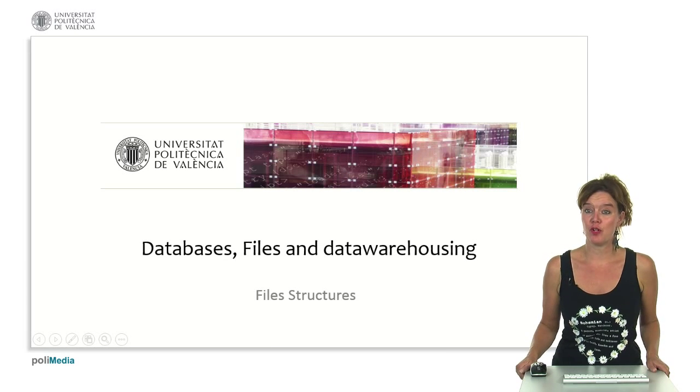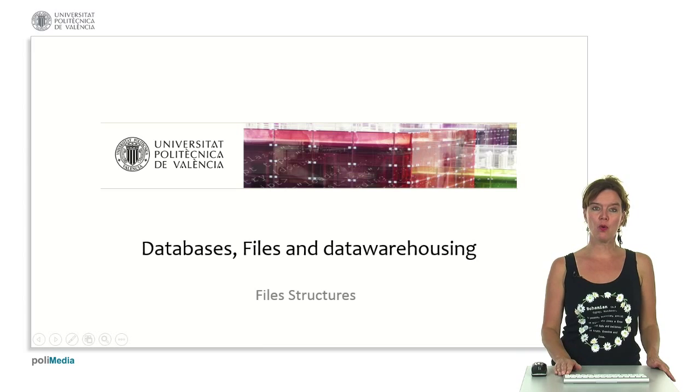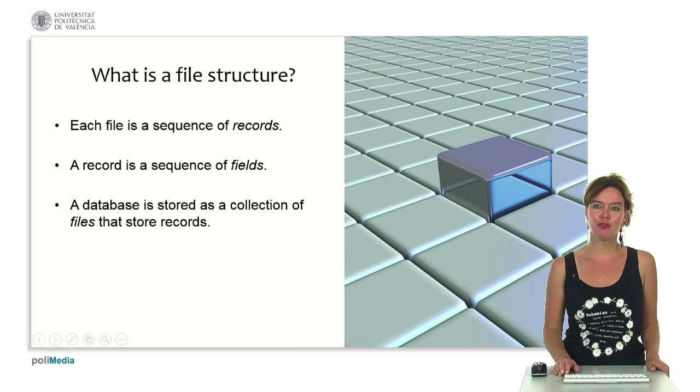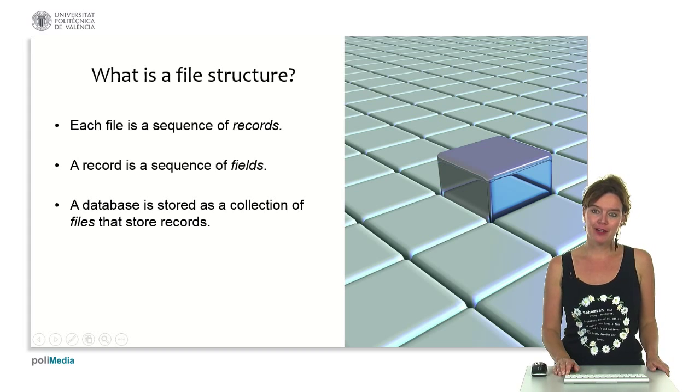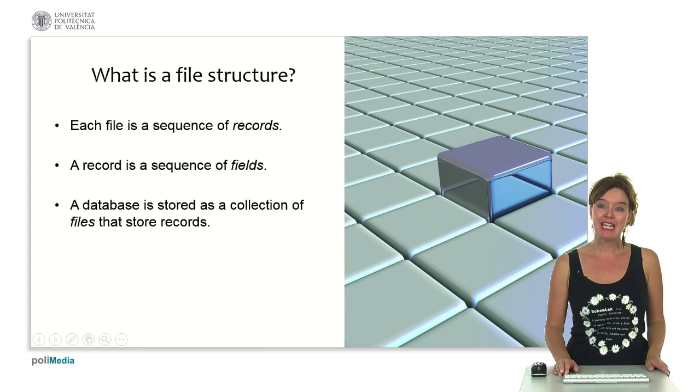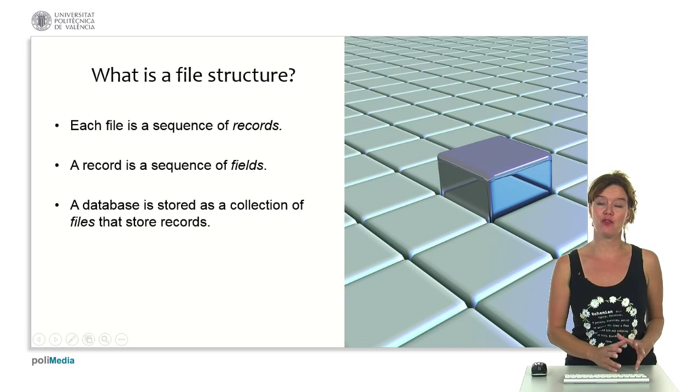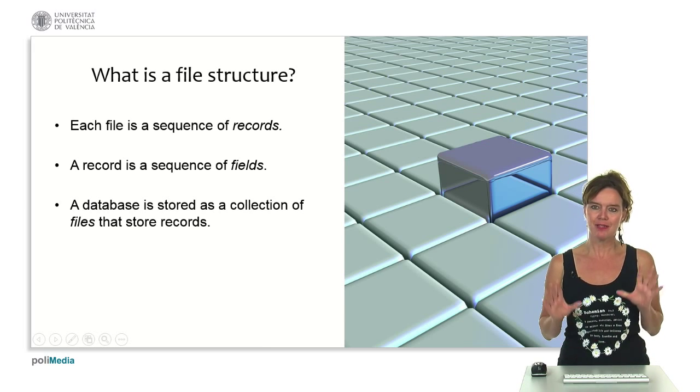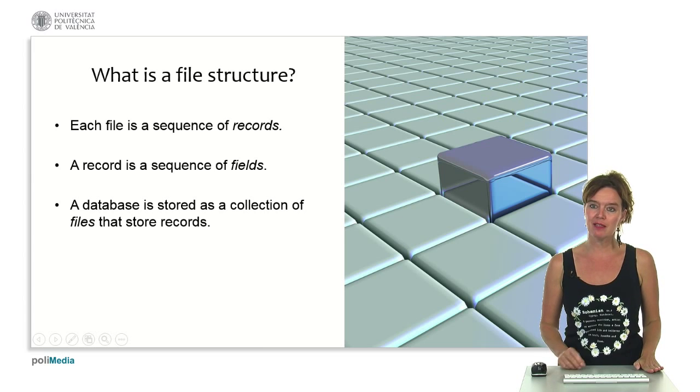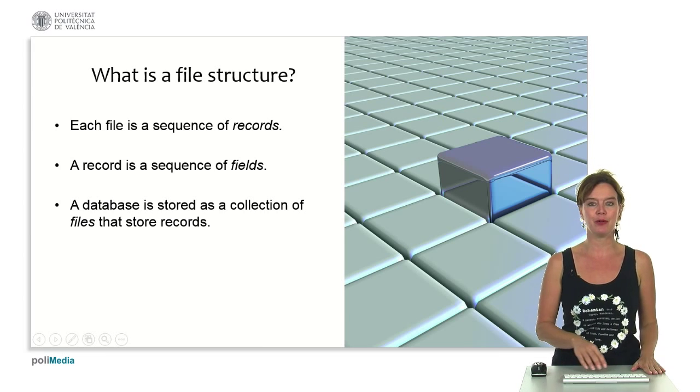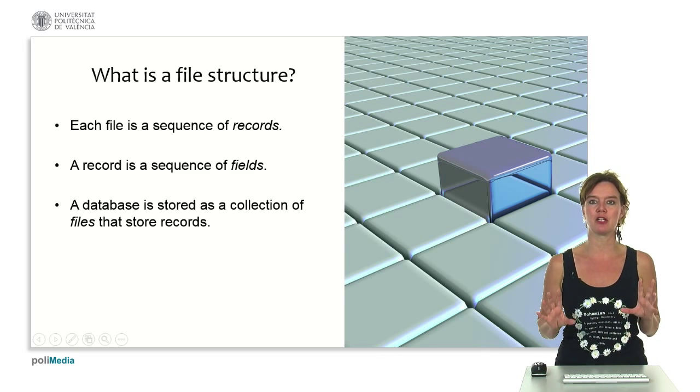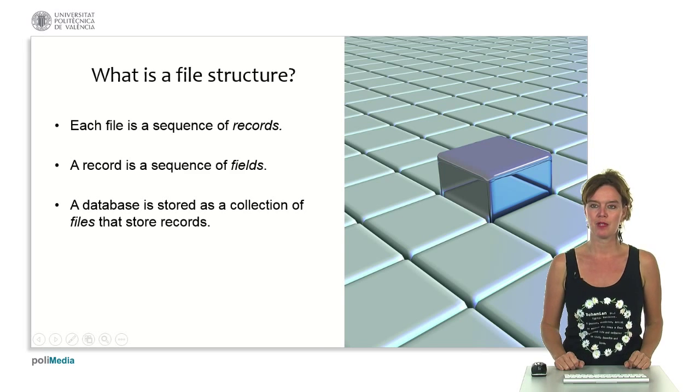We're going to look at file structures. Remember that a file is a sequence of records, and a record is a sequence of fields. A database is actually stored as a collection of files that store records. Remember this terminology: a file is a sequence of records, a record is a sequence of fields, and a database is a collection of these files.